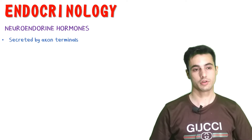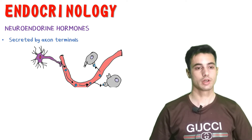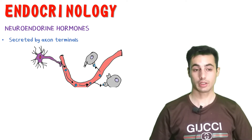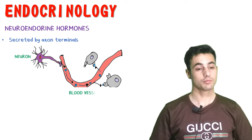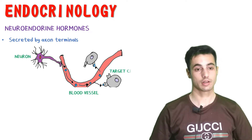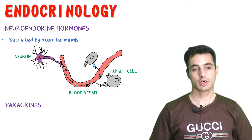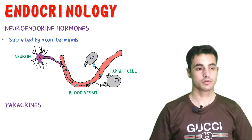The neuroendocrine hormone is very similar to the endocrine hormone, but these are secreted by the axon terminals. The axon terminals secrete the chemical messengers into the bloodstream, and the blood carries them to the target cell located at some other part of the body.